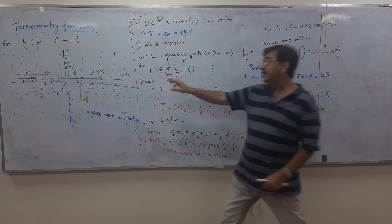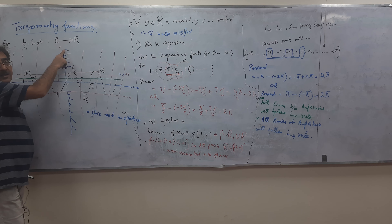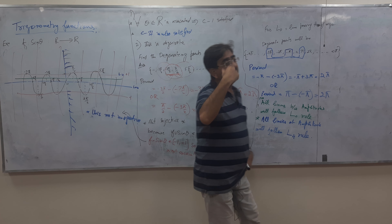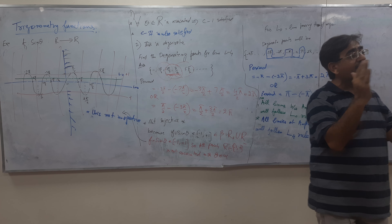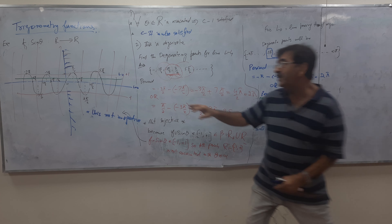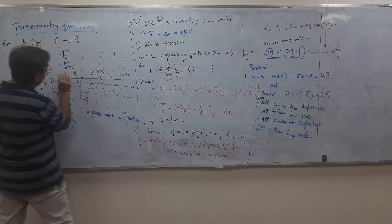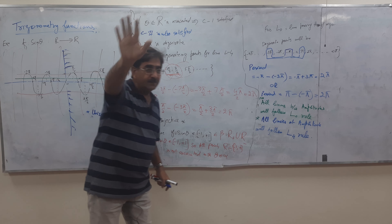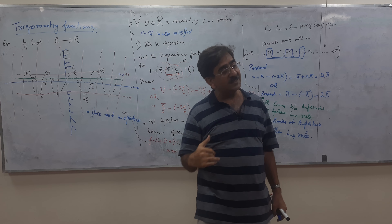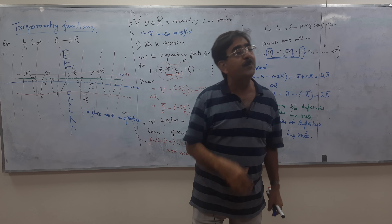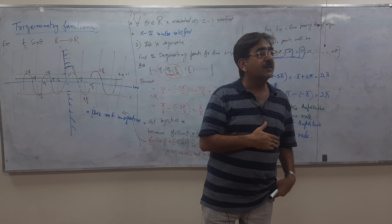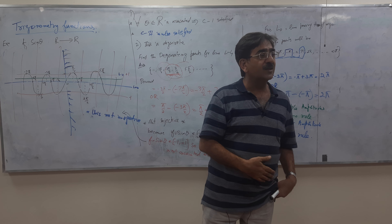So if we remove this range constraint, points beyond plus 1 and minus 1 — like plus 2, plus 3, plus 4, minus 2, minus 3, minus 4 — the curve will never reach those values. That is why the function is not surjective.